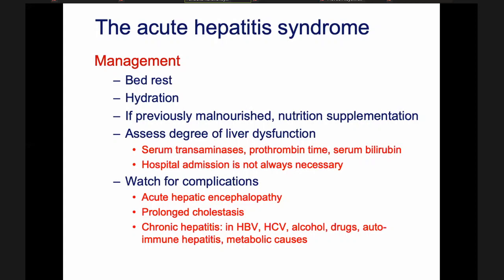You can assess the degree of liver dysfunction using serum transaminases, prothrombin time, and serum bilirubin. Hospital admission is not always necessary — the majority of patients with acute hepatitis are managed at home. But it's very important to watch for complications.